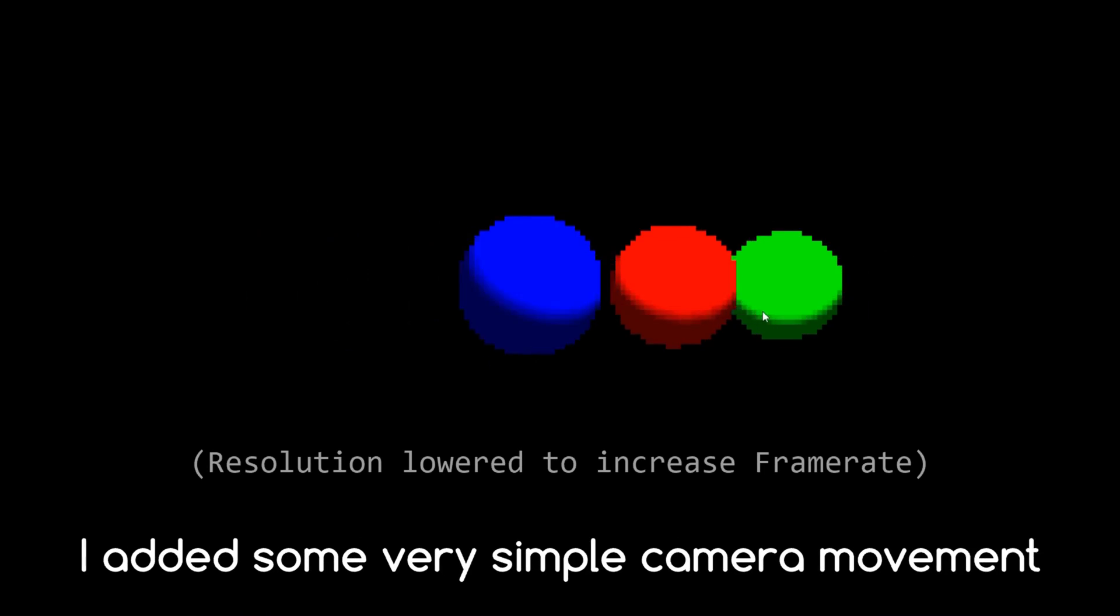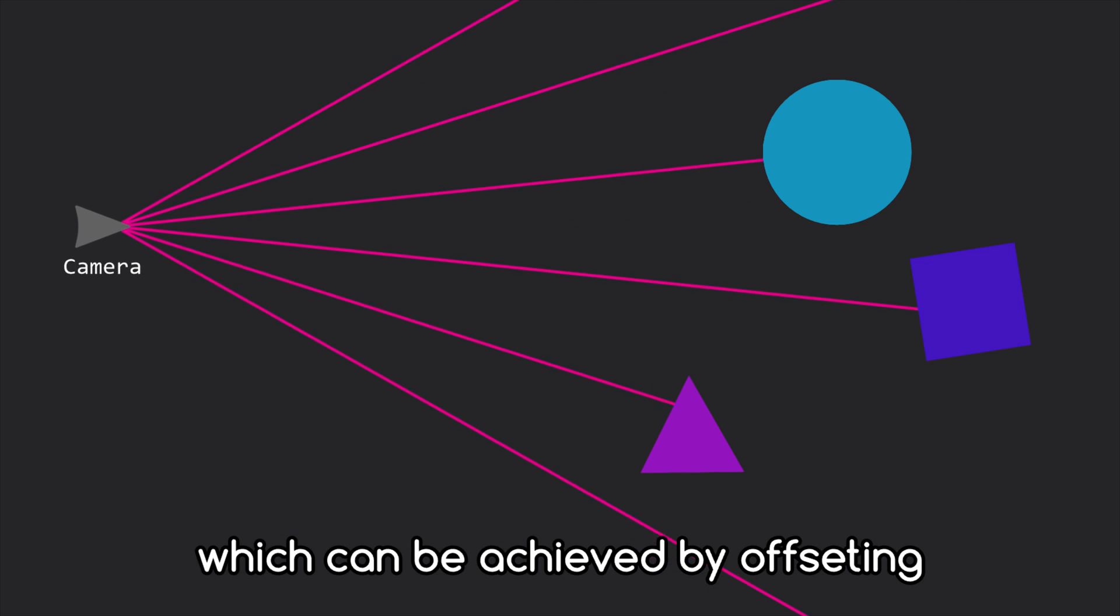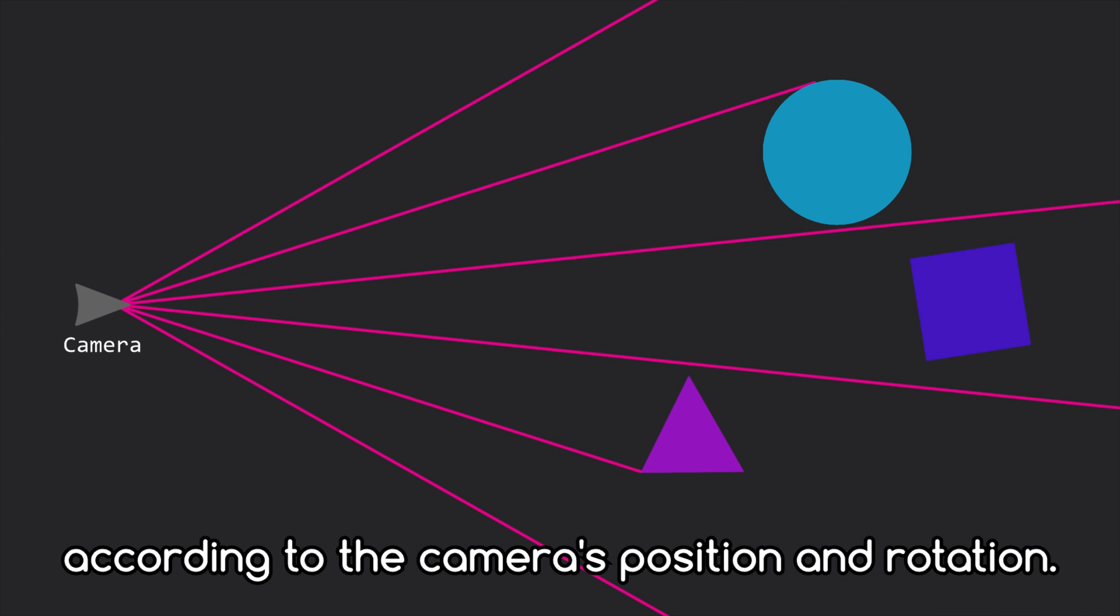Before going any further, I added some very simple camera movement, which can be achieved by offsetting the ray origin and rotating the ray directions according to the camera's position and rotation.